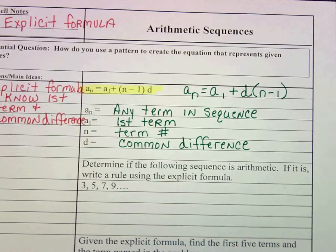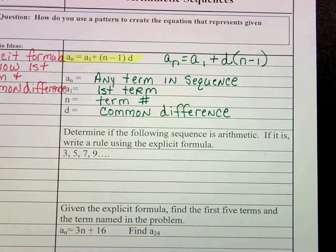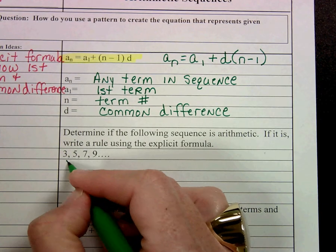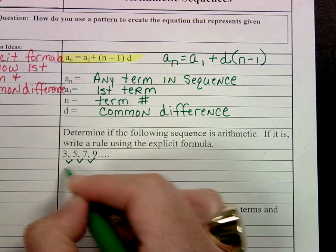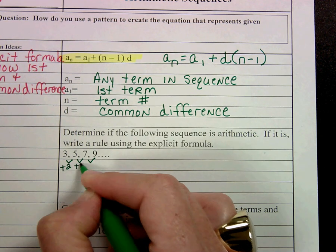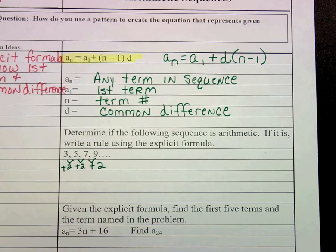And then d stands for the common difference, because that's the other big thing that we need to know. Okay, so let's determine, first of all, if this sequence is arithmetic. Remember, we need to have an adding and subtracting pattern, and you'll notice that every time here we're adding 2. So yes, this is arithmetic.